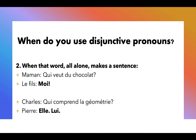The second case when we use disjunctive pronouns is when the disjunctive pronoun all by itself makes a sentence. So maman could say, qui veut du chocolat? And le fils could go, moi. Or Charles could say, qui comprend la géométrie? Who understands geometry? And Pierre might say, elle — she, or she does. Lui — him, he does.